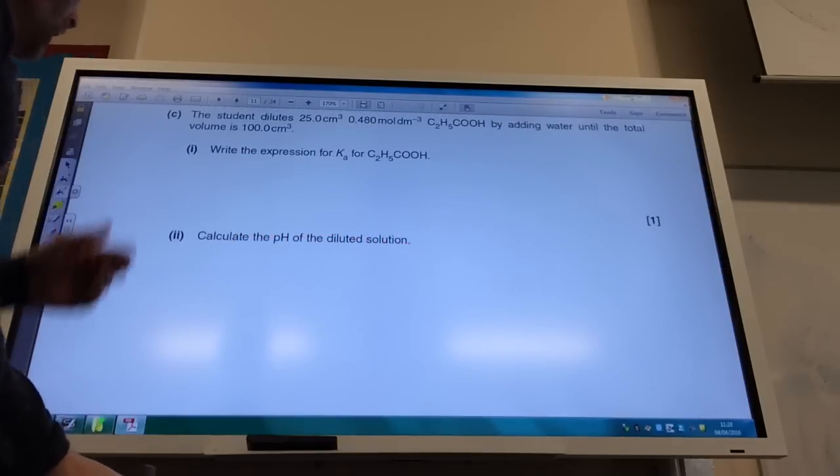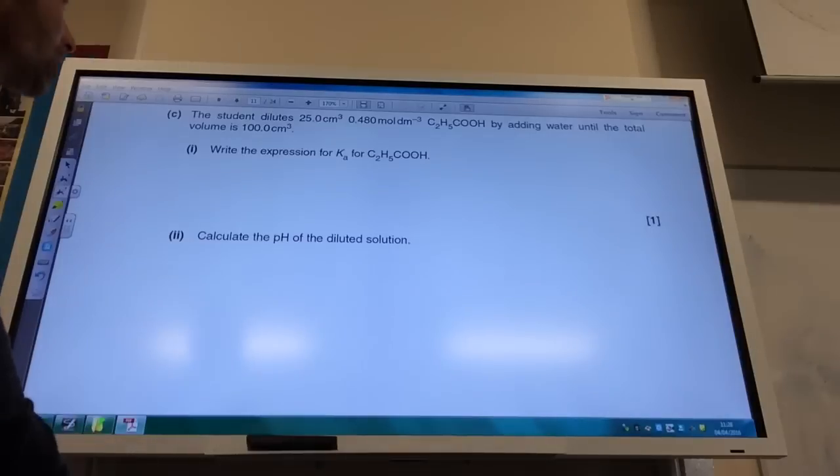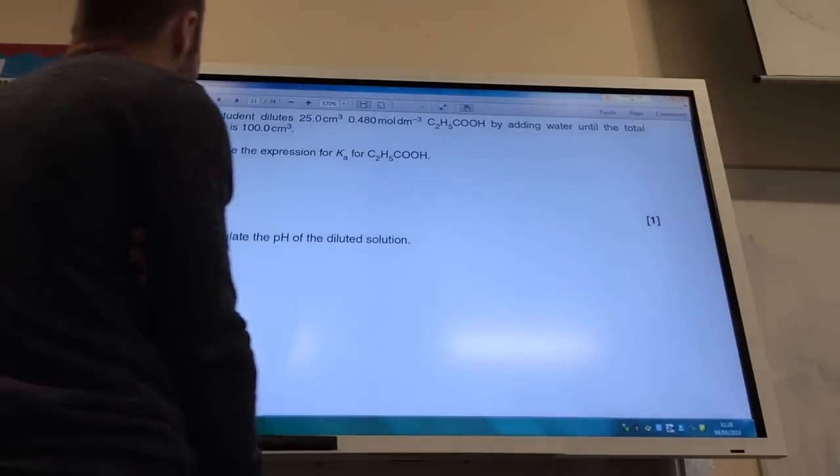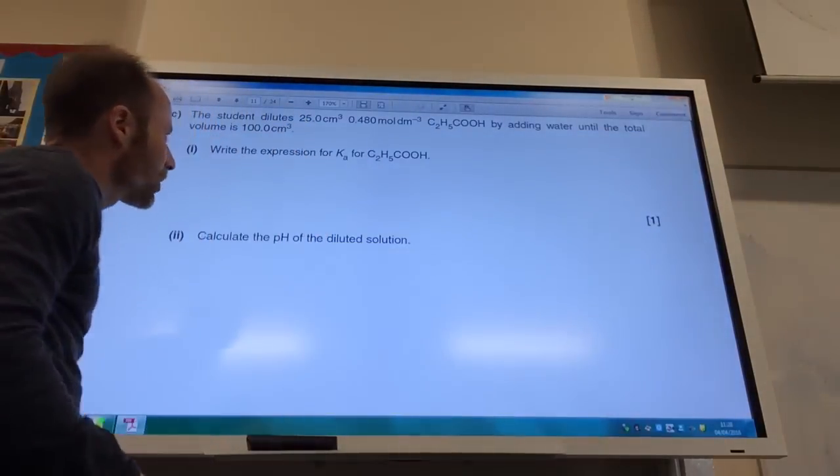So the student dilutes the 25 centimeters cubed of propanoic acid by adding water until we get 100 centimeters cubed. Right, expression for Ka.